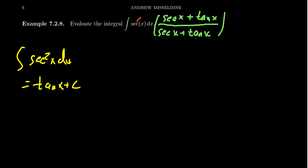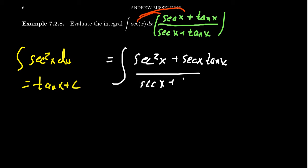Distribute the secant throughout the numerator. And when you do that, the numerator becomes secant squared x plus secant x tangent x. And this sits above secant x plus tangent x. And don't forget your dx here.